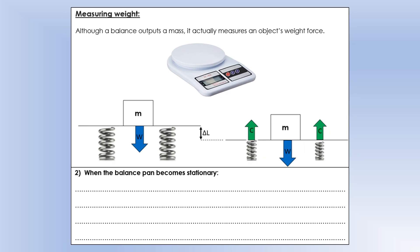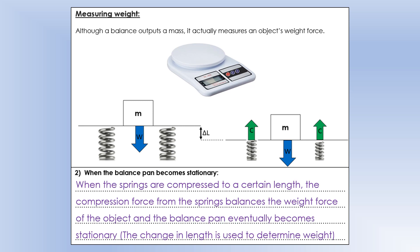As you try and compress something it starts to resist you - that's what we call a compression force. Initially the weight force is much bigger, so it compresses the springs and shortens them. Eventually the pan becomes stationary, at which point the compression forces equal the weight force and cancel each other out. By measuring the change in length delta l, we can calculate the weight force and divide by 10 to get the mass.